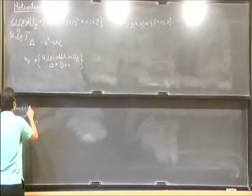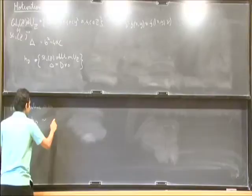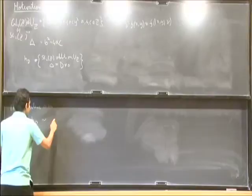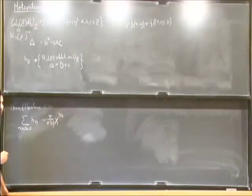It was a theorem proved by Mertens in 1874 that this grows as a power like x^(3/2) and the constant in front of it is π/(18ζ(3)).